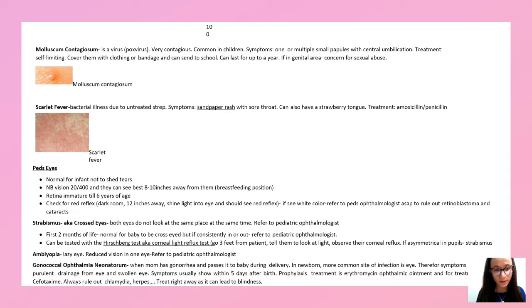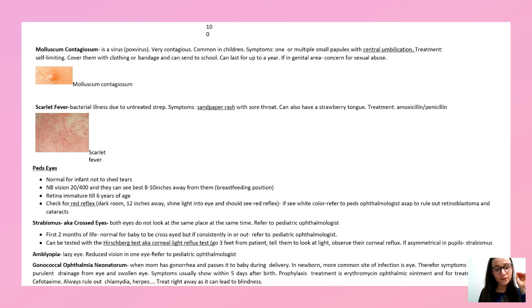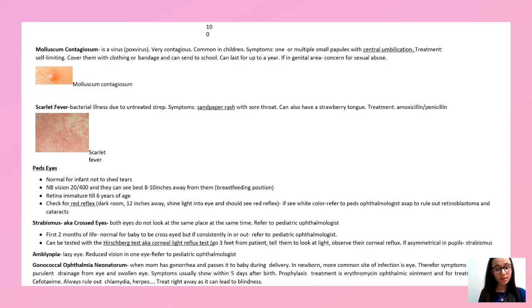For pediatric eyes: always check for the red reflex — if you see a white color (leukocoria), refer immediately to ophthalmology to rule out retinoblastoma. Strabismus (cross-eyes) is when both eyes are not looking at the same point. Within the first two months of life it can be normal, but after that refer to ophthalmology. Gonococcal ophthalmia neonatorum: when mom has gonorrhea and passes it to baby during birth, causing early eye discharge and swelling. Give erythromycin ophthalmic ointment prophylactically; treatment is ceftriaxone. Don't miss this — it can lead to blindness.